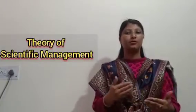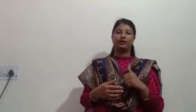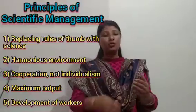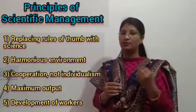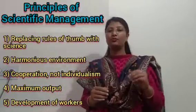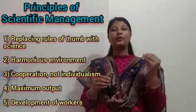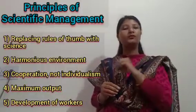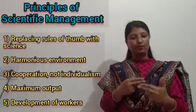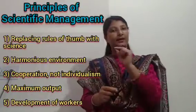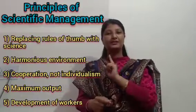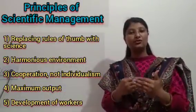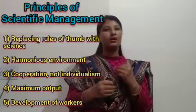Here are the five principles of scientific management given by F.W. Taylor. The first is replacing the rule of thumb with science. According to this principle, work assigned to anyone should be observed and analyzed with respect to time and effort involved. A scientific approach should be used for taking managerial decisions instead of basing decisions on opinions, intuition, or rule of thumb.